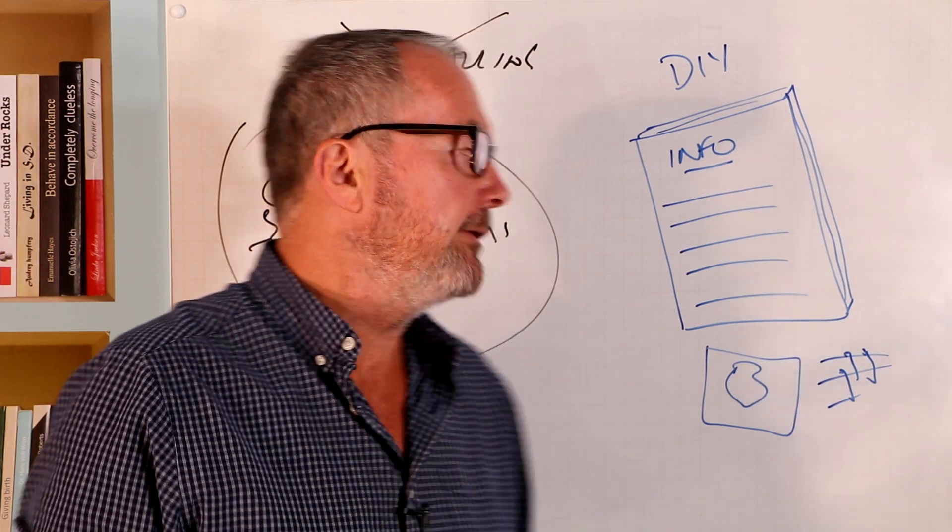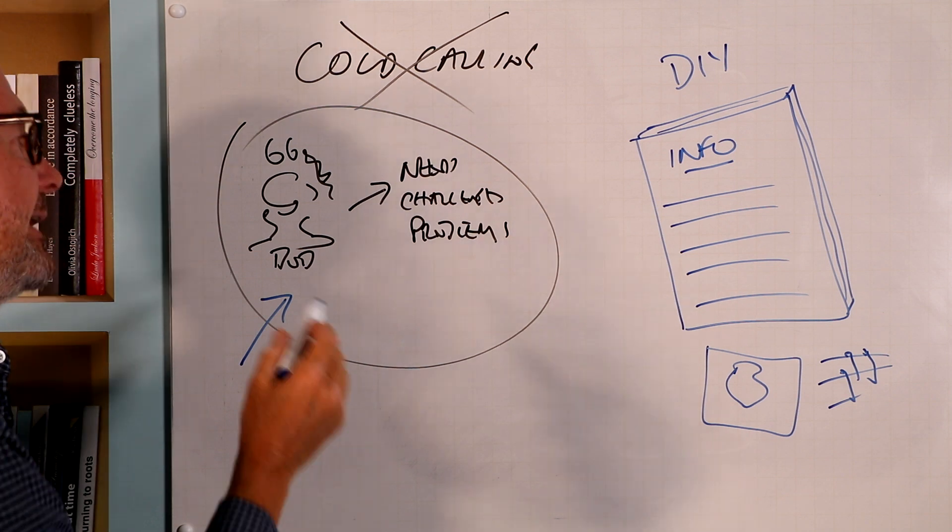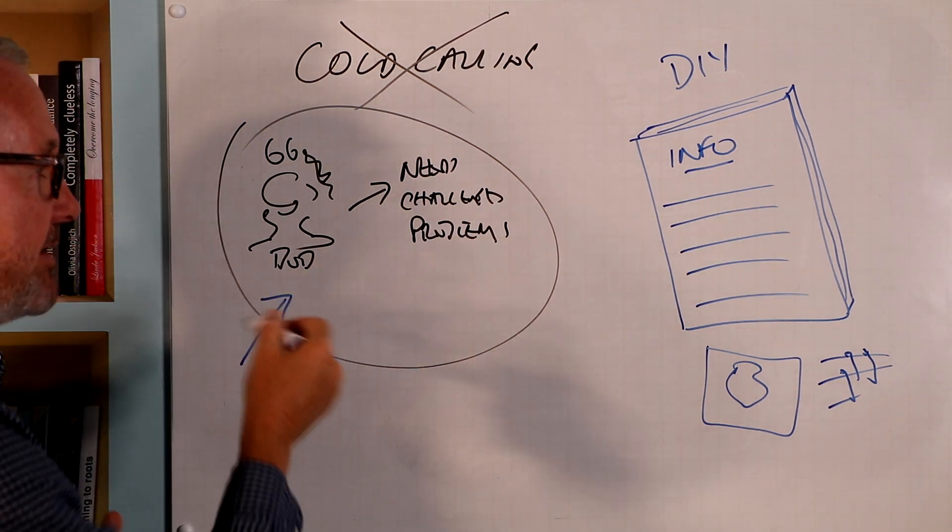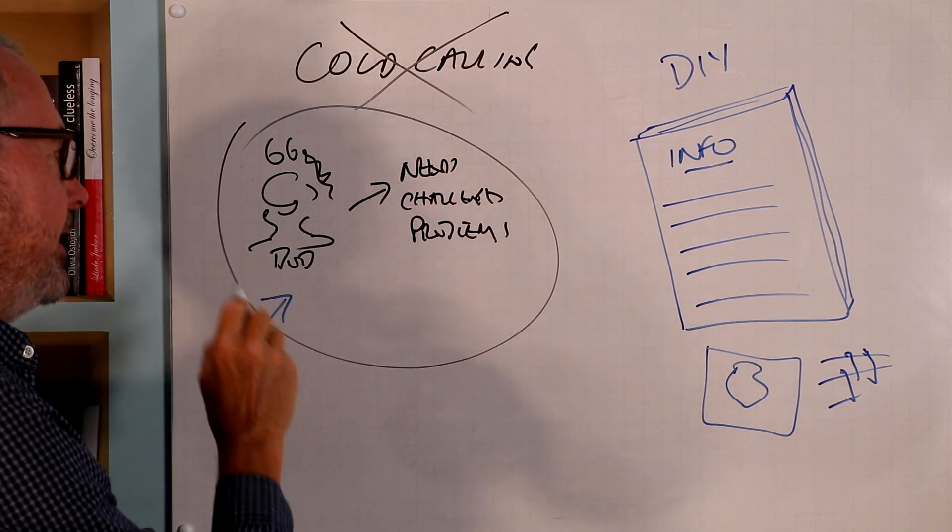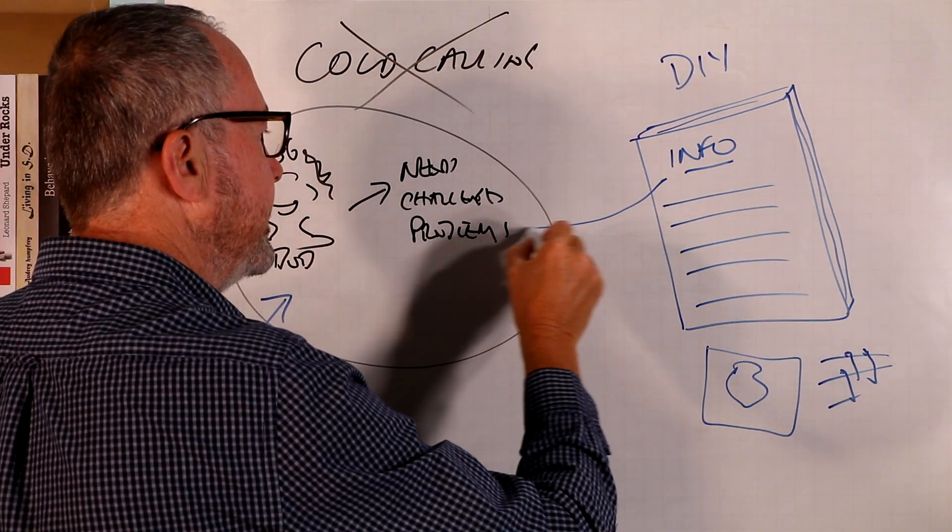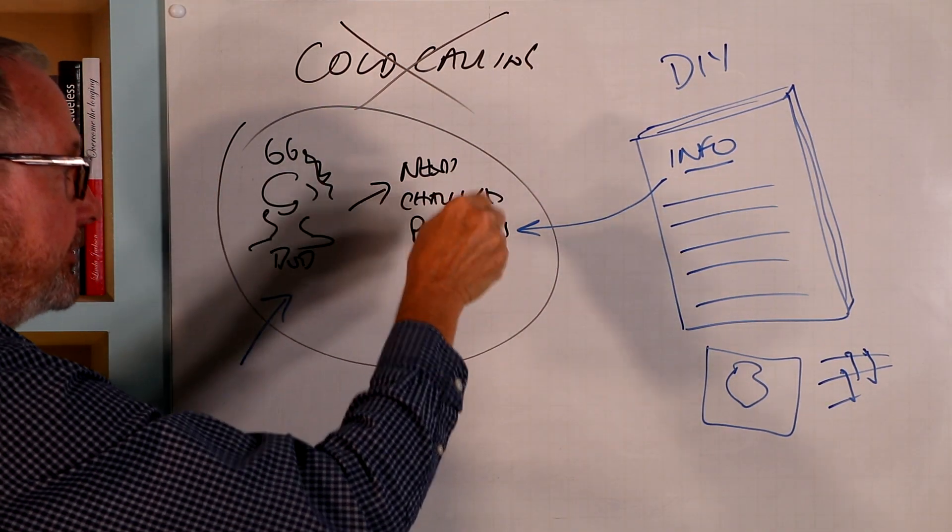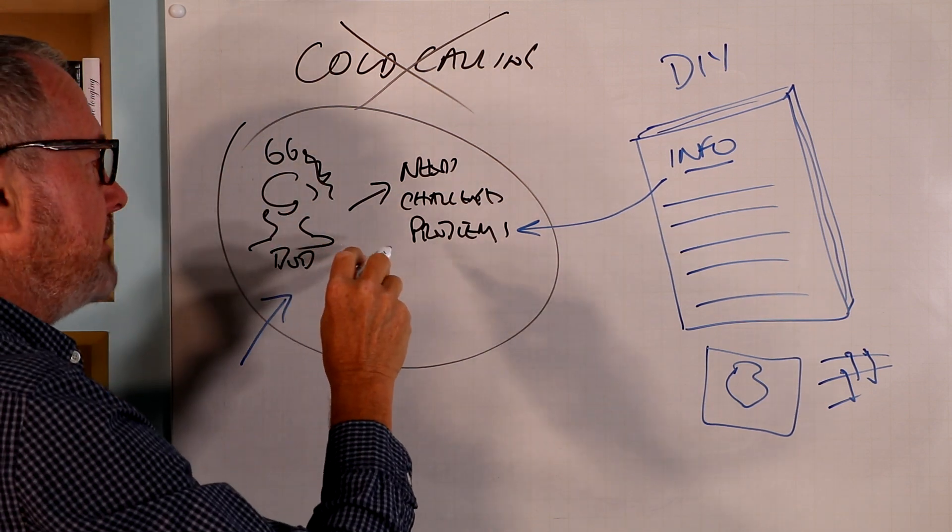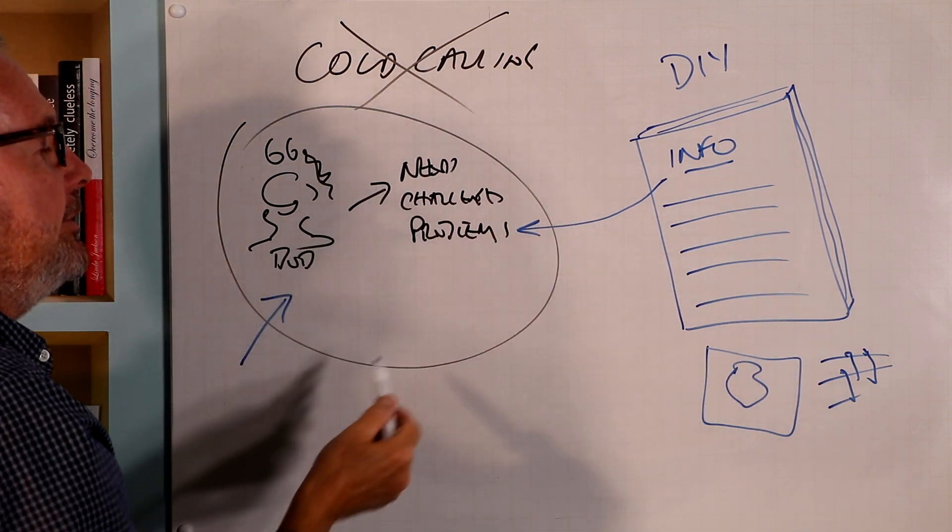Then what you do is you contact the customer, however you wish to do it. It could be by direct mail. It could be by email. You could even phone them. You could use live chats, whatever method you've got to contact the customer. But you don't sell them anything. You just ask permission to send them the information that you talked about. Obviously they've got the problems and needs and challenges because you've researched that. And people will say yeah, send it to me, or whatever it is. And that's what you do. It's all you do.